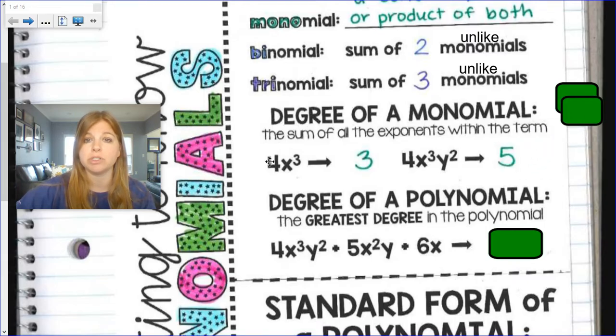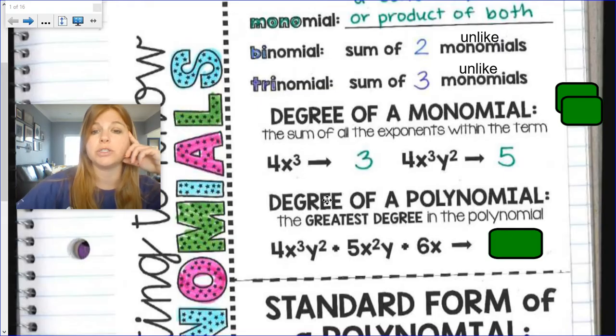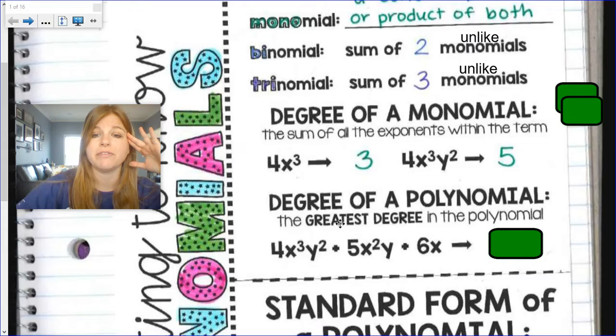Now the degree of a polynomial would be that I would have to find whatever the greatest degree of the polynomial is by finding the individual degrees of each monomial.